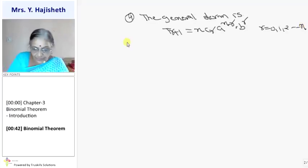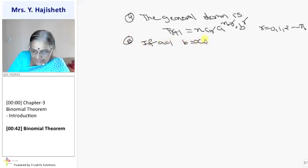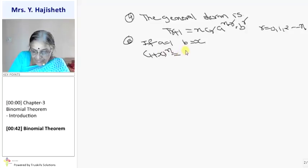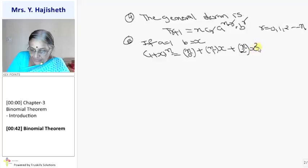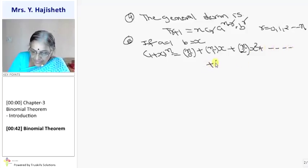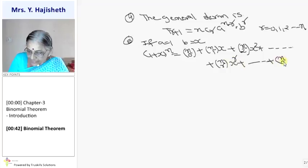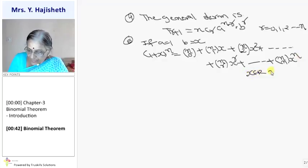Fifth point: if A is 1 and B is X, then 1 plus X raised to N is defined as NC0 plus NC1 X plus NC2 X squared, and so on. The power of X increases by 1 each term, because X is B and A is 1, so 1 to any power remains 1. The general term is NCR X raised to R, and the last term is NCN X raised to N. X belongs to R and N belongs to N.